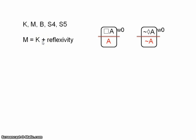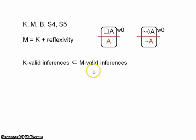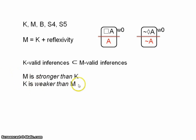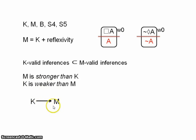So everything that's valid in K is valid in M, but there are arguments valid in M that are not valid in K. We say that the set of inferences valid in K is a proper subset of the set of inferences valid in M. The shorthand for this is to say that M is stronger than K, or K is weaker than M. We can represent this relation graphically with an arrow.